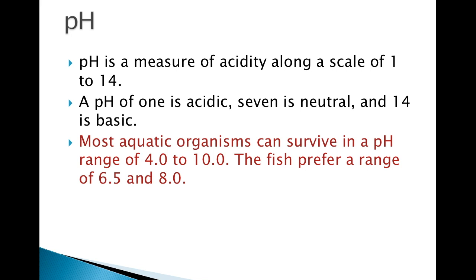pH is a measure of acidity along a log scale from 1 to 14. A pH below 7 is considered acidic, and above 7 is considered basic. A pH of 7 is considered neutral. Most aquatic organisms can survive in a pH range of 4 to 10, but most organisms prefer 6.5 to 8.